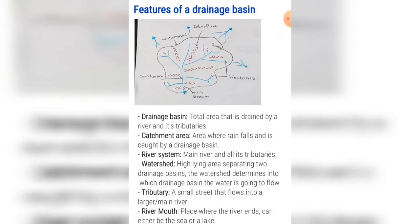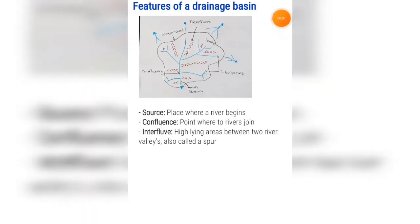A tributary is a small stream that flows into a larger river or the main river. A river mouth is the place where the river ends — it can either be a sea or a lake. The source is the place where the river begins. Remember, the source will always be higher up than the river mouth.